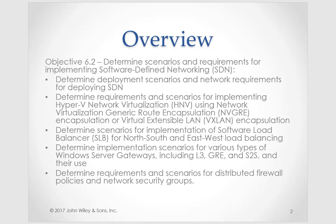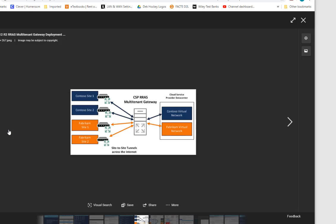Windows Server gateway is a virtual machine-based software router and gateway that allows cloud service providers and enterprise organizations to enable data center and cloud network traffic routing between virtual and physical networks, including the internet. Here's a visualization: whereas a NAT router for a small network has one gateway, the concept of a multi-tenant Windows Server gateway allows you to create connections between multiple physical sites and your virtualized networks — so multiple connections, hence multi-tenant.